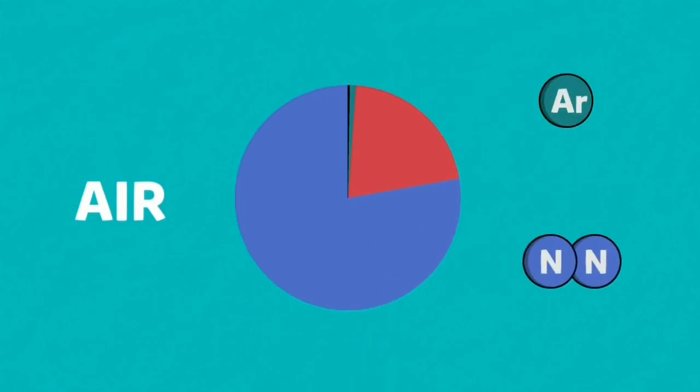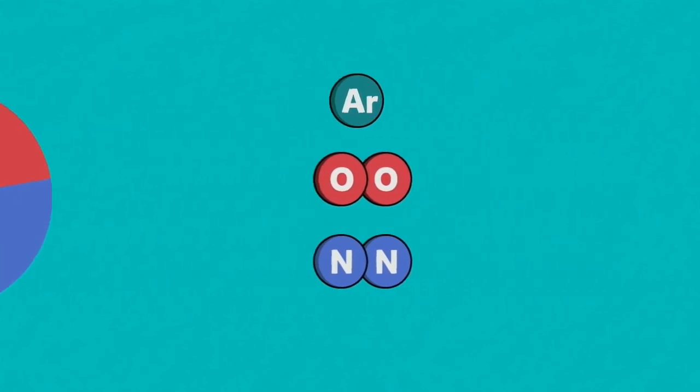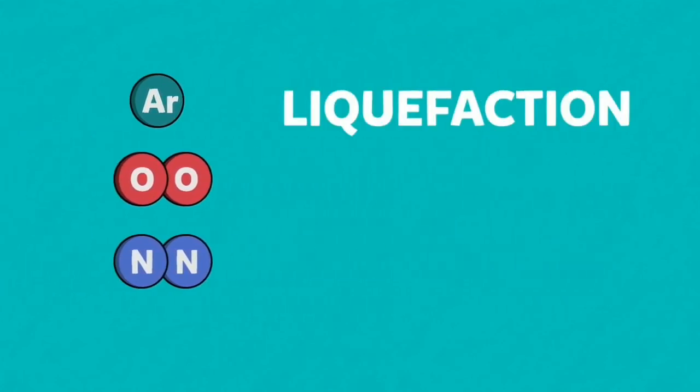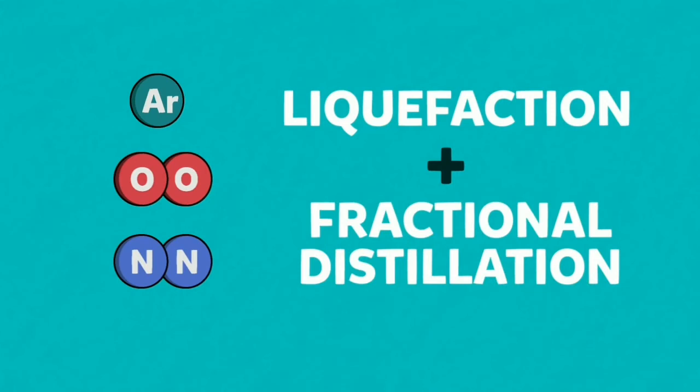Nitrogen, argon, and oxygen can be separated from the air by liquefaction followed by fractional distillation.